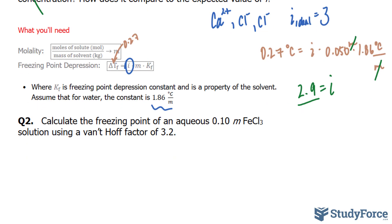Let's move on to question number 2. Calculate the freezing point of an aqueous 0.10 molal iron chloride solution using the Van't Hoff factor of 3.2. So this time we've been given i, it's 3.2, remember no units, times 0.1, multiply 2, 1.86.